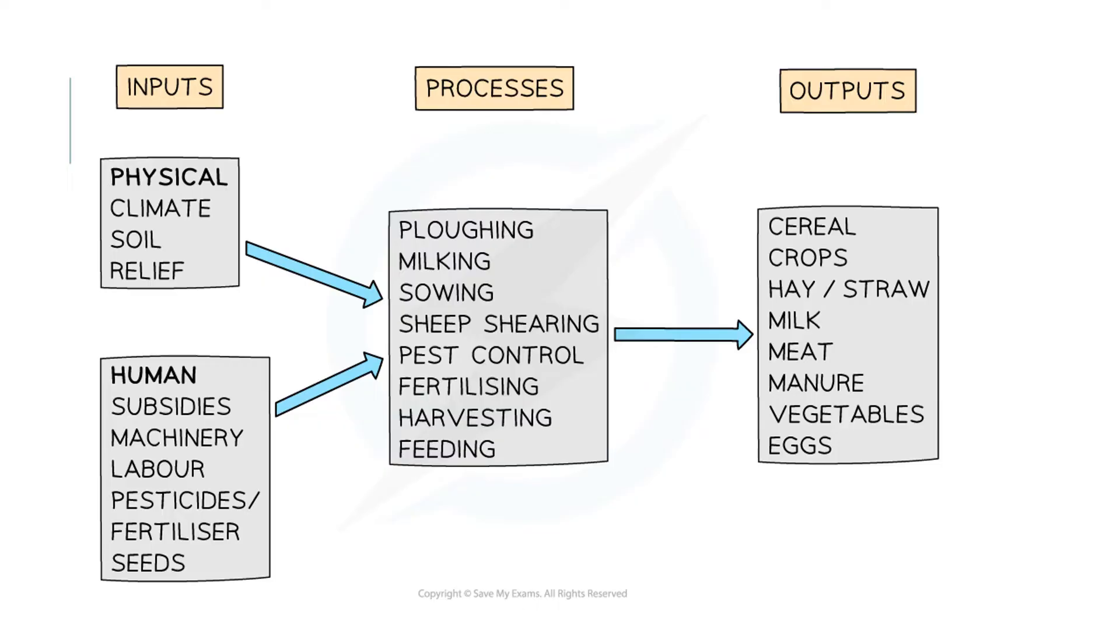What I'm going to do now is take you through the various types of farming and what their common inputs, processes and outputs are with a definition of each of the six type of farmings that you need to know from the syllabus.